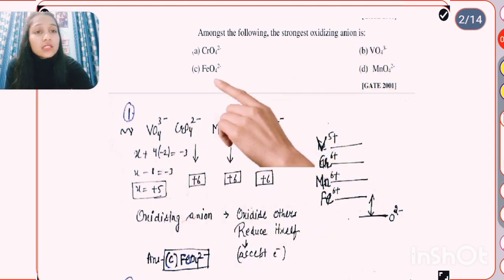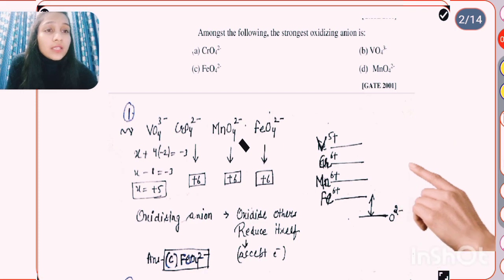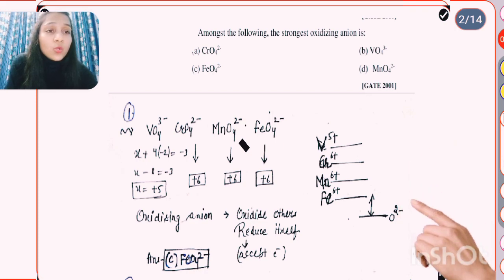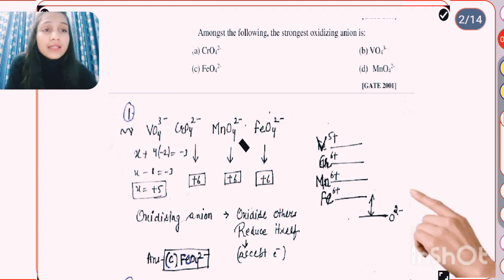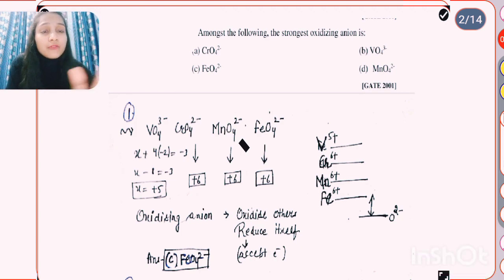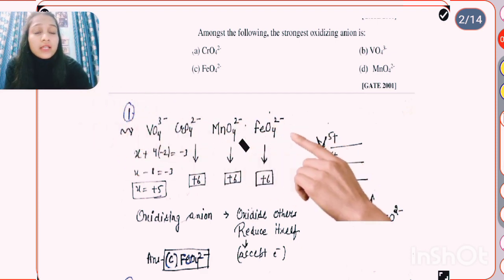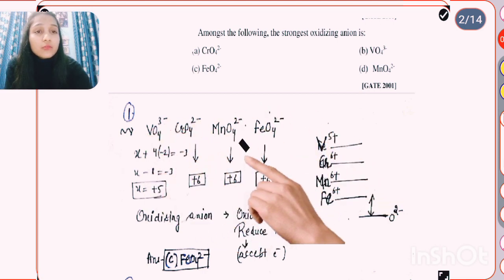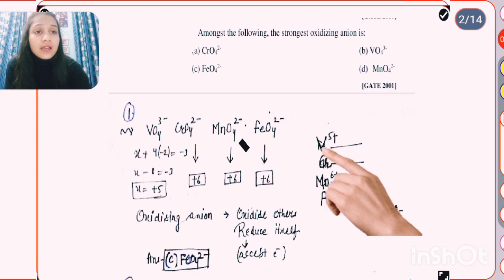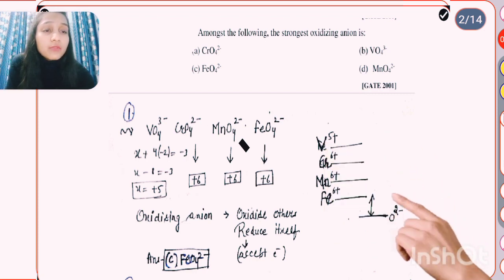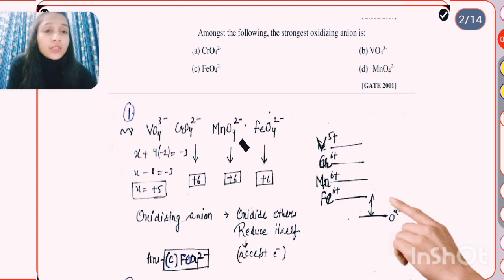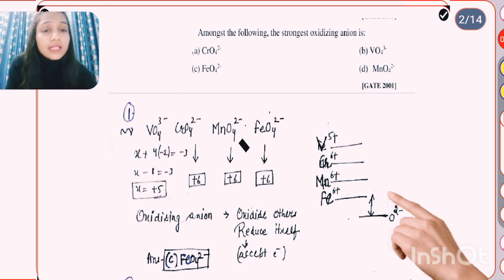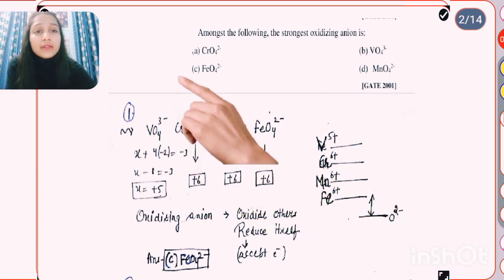Among the remaining three options, as more the electronegativity, lower it stays in the energy diagram. Oxygen has higher electronegativity so it lies below. Electronegativity increases along the period, so the order is: Fe has highest electronegativity among all, then Mn, then Cr, then V. There is less energy gap between Fe and O, so it is easier for iron to accept electrons. The answer is option C: FeO4 2- as it is the strongest oxidizing anion.